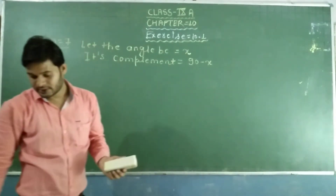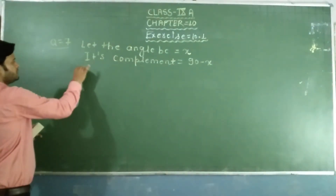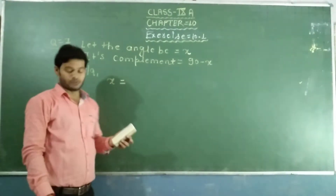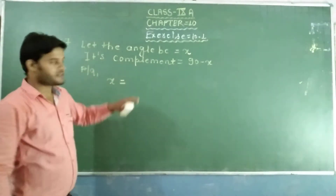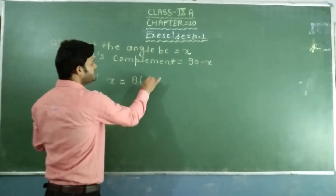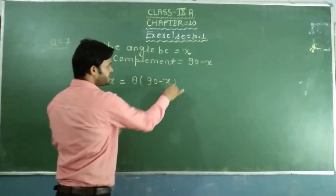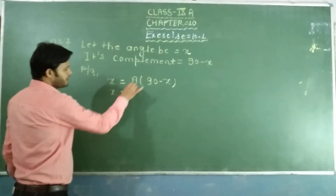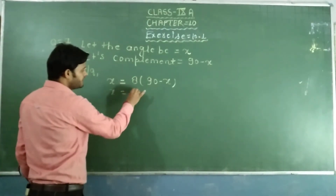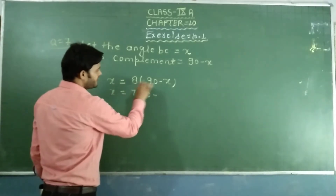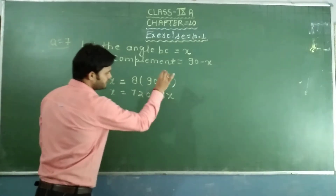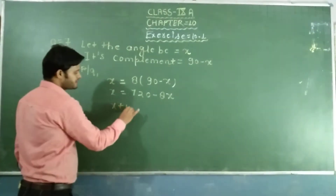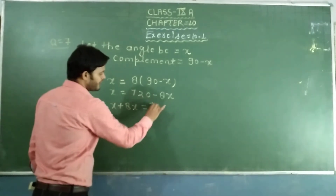Now, according to the question, an angle is equal to 8 times its complement. And its complement is 90 minus x. We will multiply 8 times its complement, so x equals 8 times (90 minus x). This gives us 9x plus 8x equals 720.